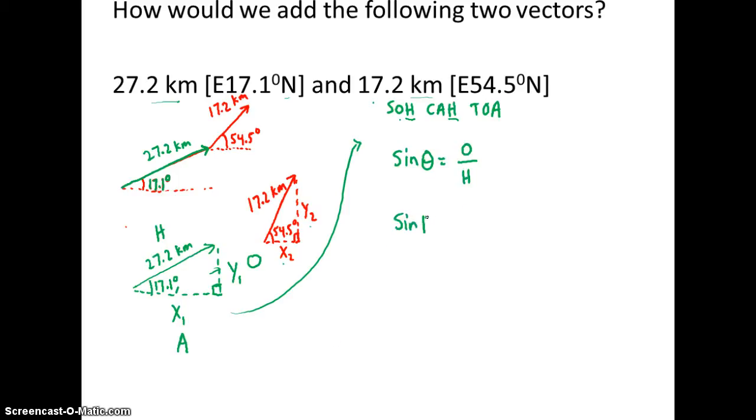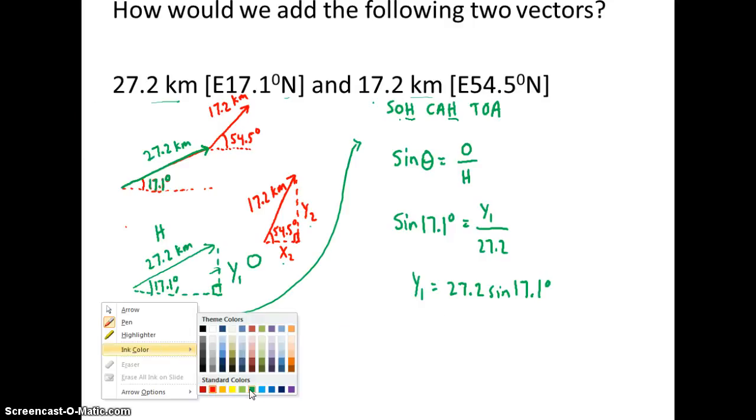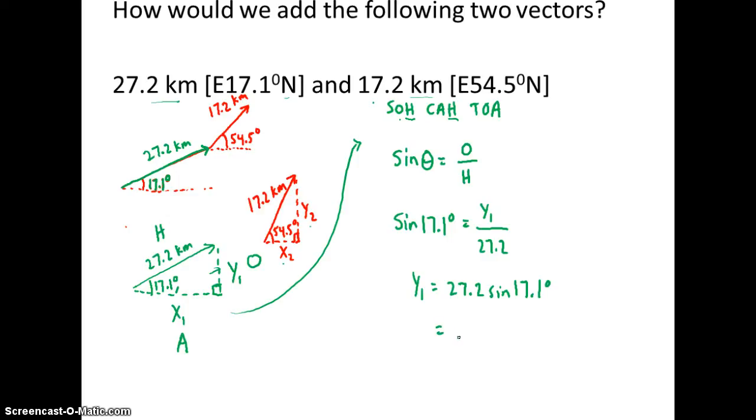Sine of 17.1 degrees, sub in our values. For opposite, we're calling y1, and our hypotenuse is 27.2. Now to get y1 all by itself, I multiply both sides by 27.2. That's going to get me eight.